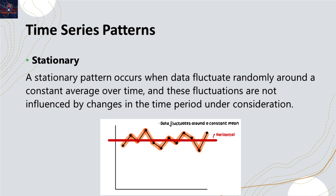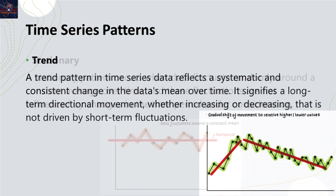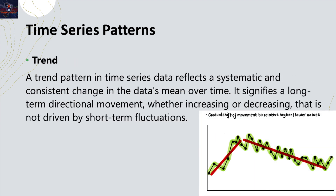Now let's go into more details for each component. Stationary pattern: a stationary pattern in time series data means that the data does not change its statistical behavior over time. It remains steady, making it easier to analyze and predict future trends. Trend pattern represents the long-term direction or pattern in the data. It can be upward indicating growth, downward indicating decline, or even flat indicating stability.